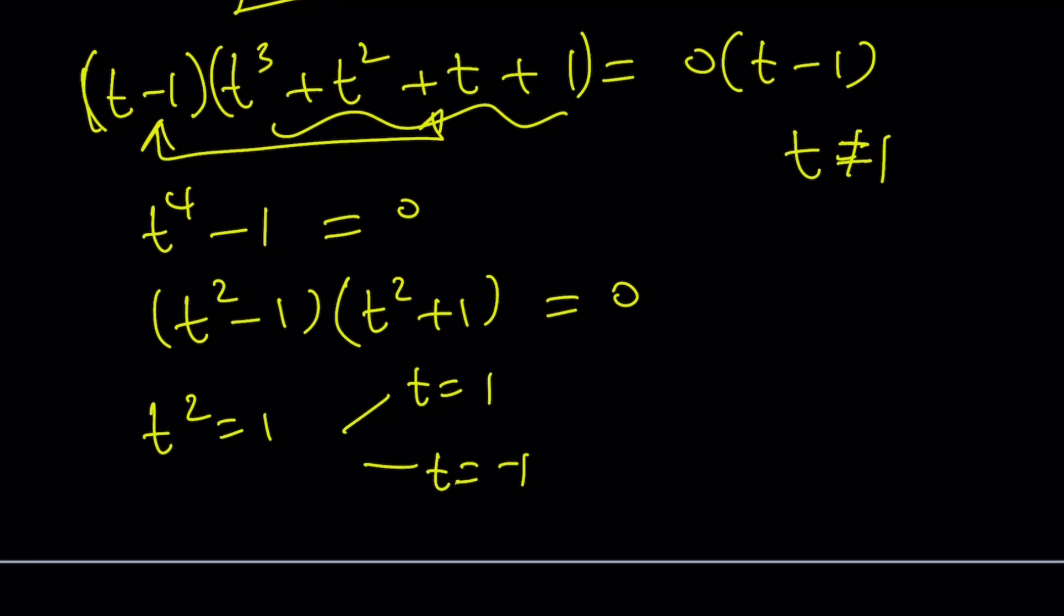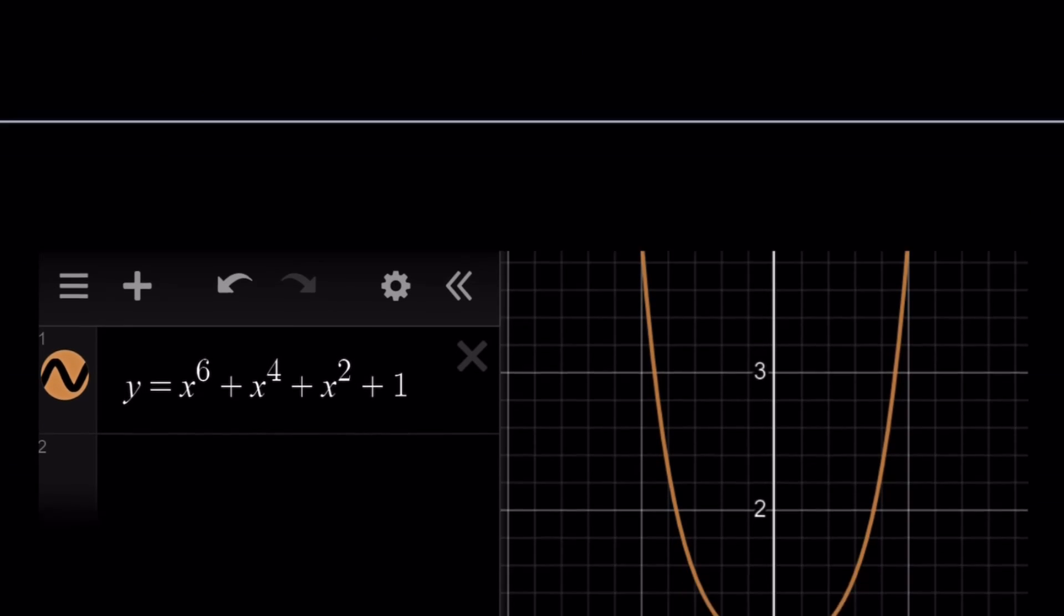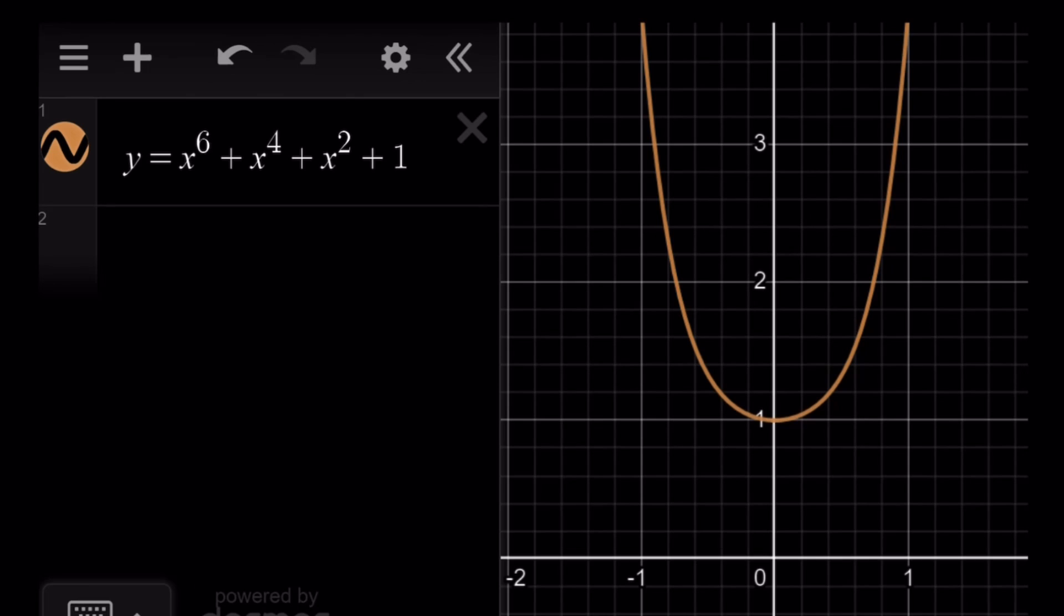And this brings us to the graph. And this graph is kind of interesting because it is a polynomial that doesn't intersect the x-axis. So there are no x-intercepts. There are no real roots. And as you can see, it is decreasing for negative x values, increasing for positive x values.